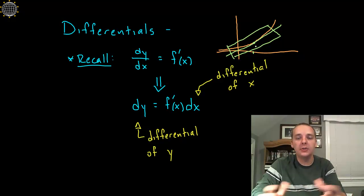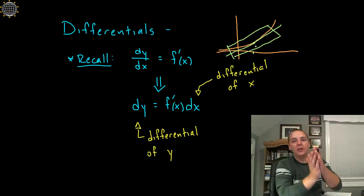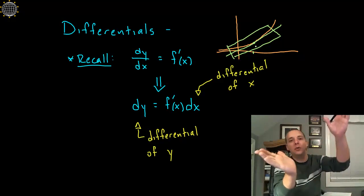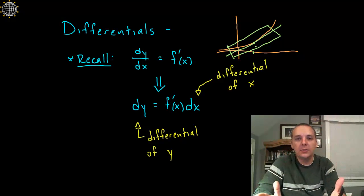Now I do understand as you leave the point of tangency that error does start to grow and it's not a usable approximation anymore, but as long as you're hanging out pretty close to the point of tangency you can use one or the other. One way that we can describe this idea of approximations using tangent lines is by using these things called differentials.